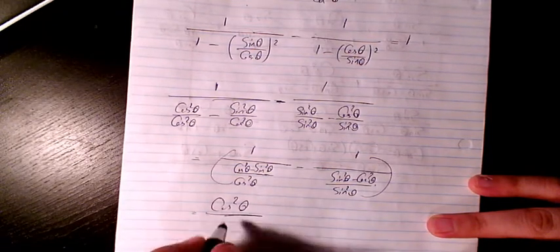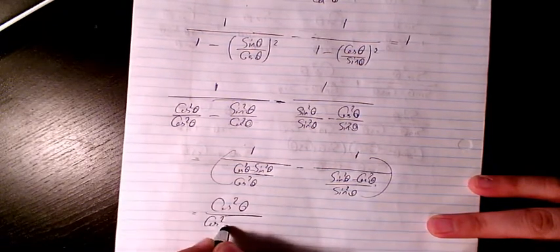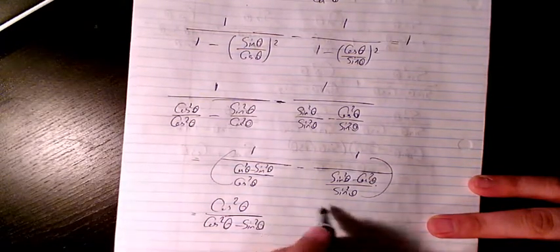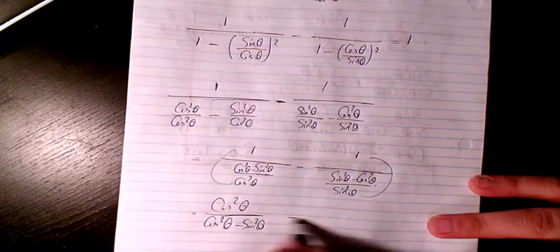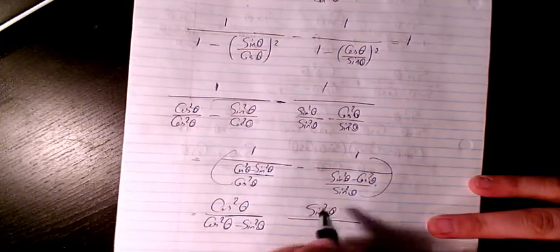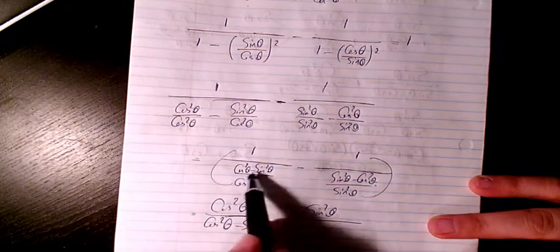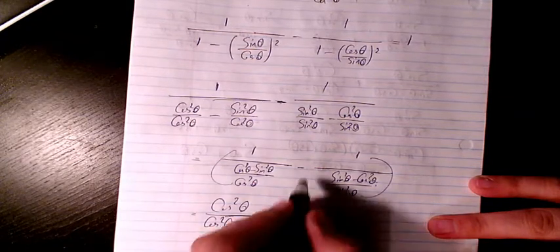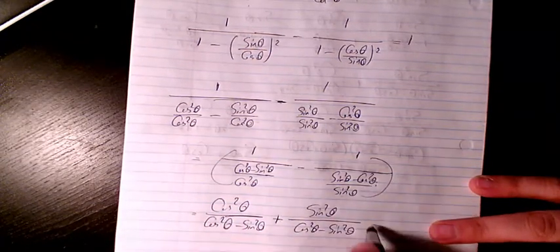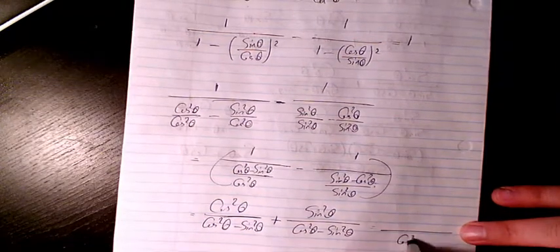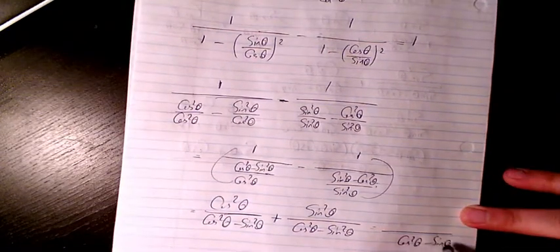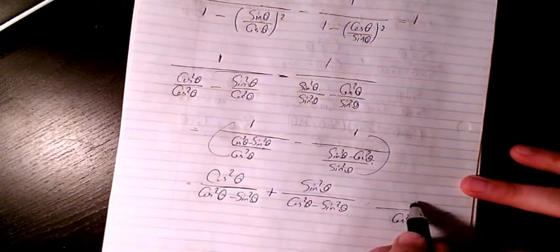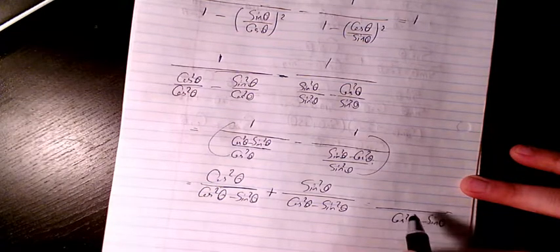So it's going to be cosine squared theta over cosine squared theta minus sine squared theta. And here we can do the same thing — sine squared theta. If I want to make it the same as this one, I multiply it by negative 1, so negative will become positive. The denominator will be cosine squared theta minus sine squared theta, and the numerator will be cosine squared theta plus sine squared theta, which equals 1.